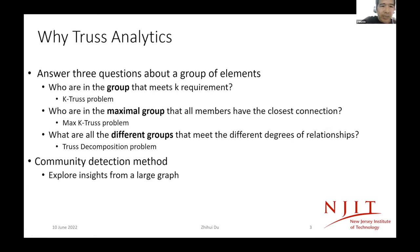Why do we need truss analytics? Truss analytics can help us answer three questions. The first is for a group of elements or people or objects, we want to know who are in the group and they meet a specific requirement, the K requirement. This is a K-truss problem. Another question is for all the members in the graph, who are in the maximum subgraph where all the members have very close relationship. This is a maximal K-truss problem.